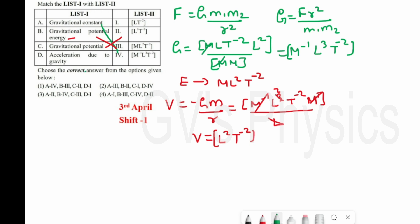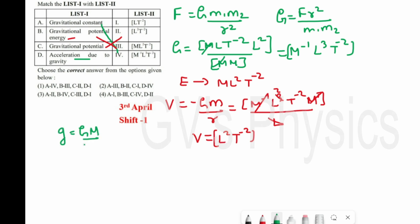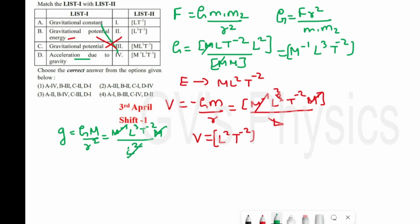Last one is acceleration due to gravity, which has the dimension of acceleration. Using g = GM/r², we substitute G = M⁻¹L³T⁻², multiply by M, and divide by L². The M terms cancel, and L³/L² = L. So the result is LT⁻², confirming it is the dimension of acceleration. D matches with 1. Option 1 is the right answer.